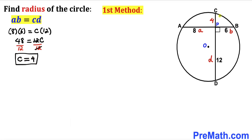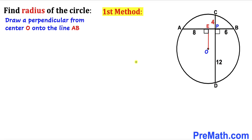So line segment CP turns out to be 4 units. In the next step, we draw a perpendicular from center O onto chord AB at point E, as you can see in this diagram.